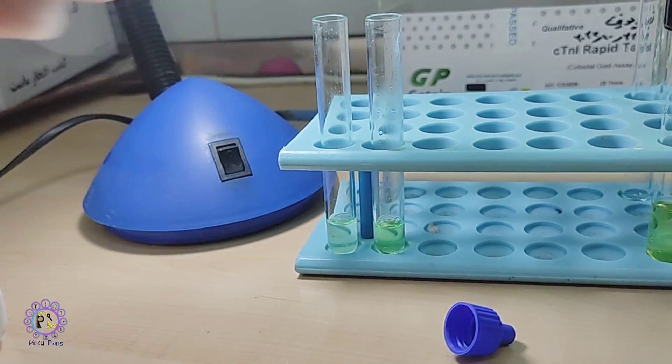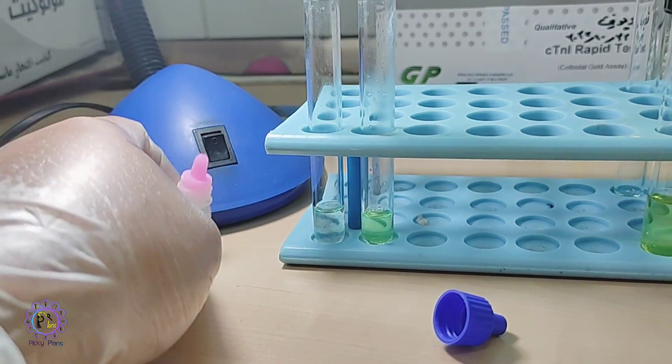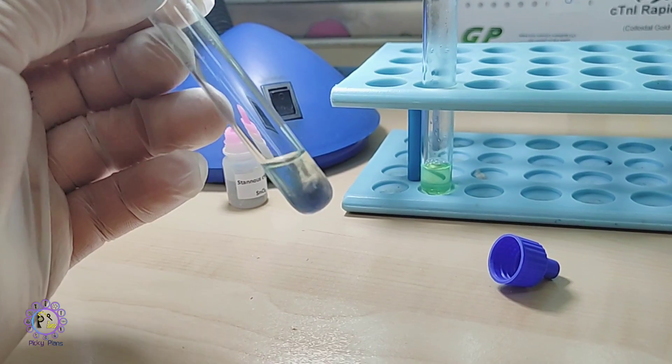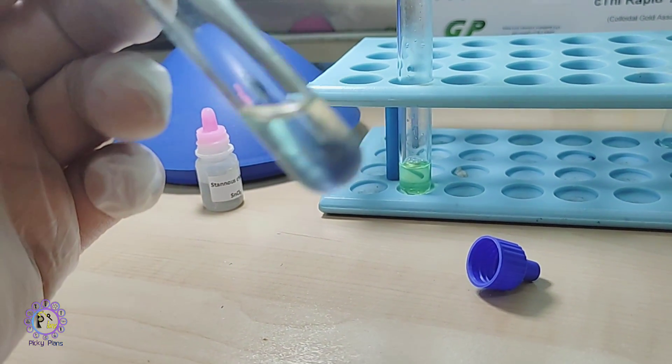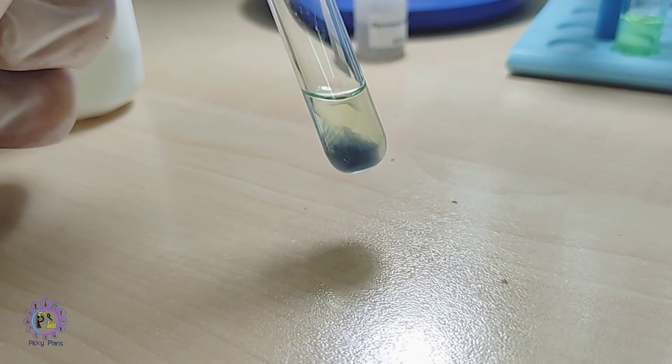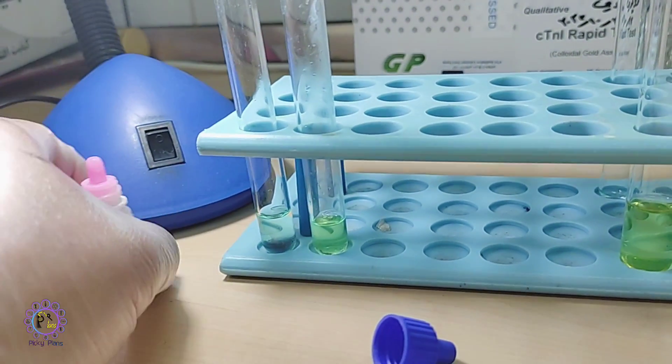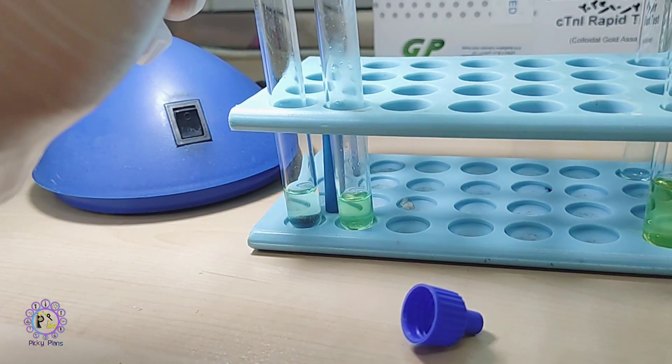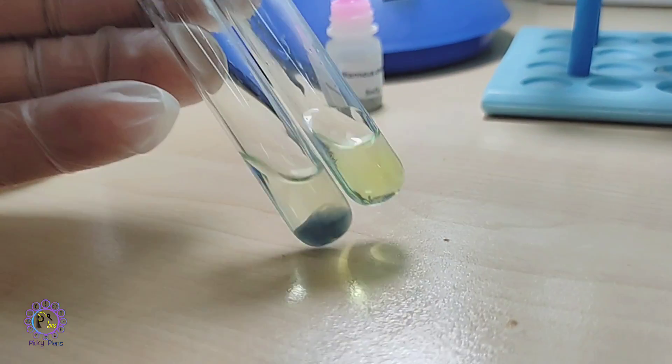I just want to add a few drops of stannous chloride to the left one to see what will happen again. Yeah, you can see after addition of stannous chloride it turns purple-gray again. Look at that. This is the gold.